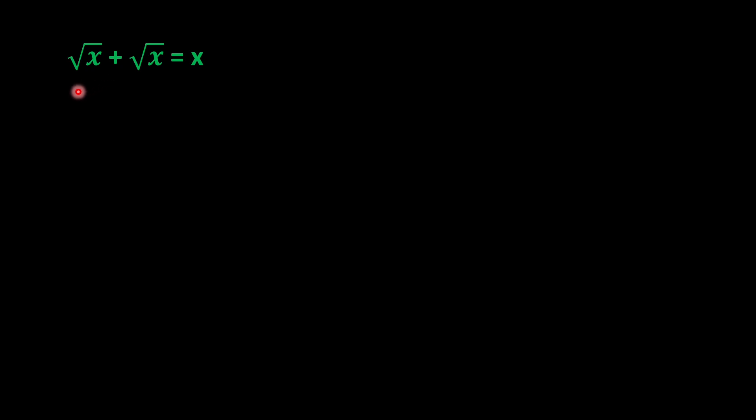Let's solve √x + √x = x. So directly square on both sides of the equation. We will get (√x + √x)² = x².